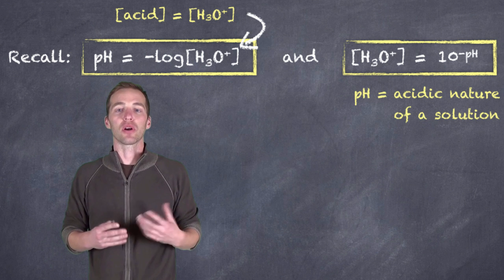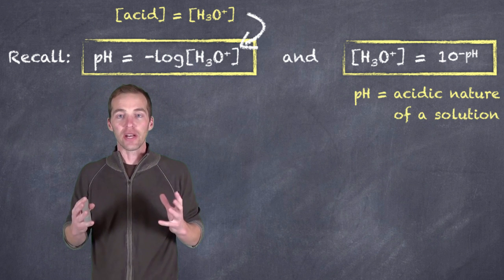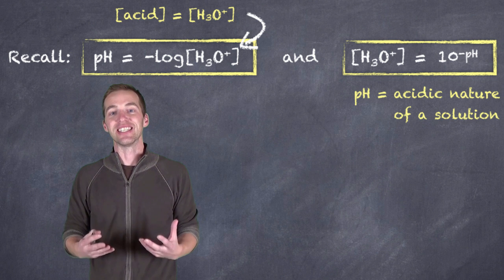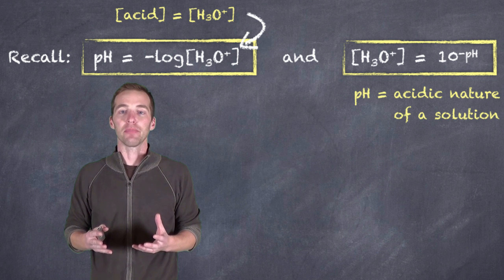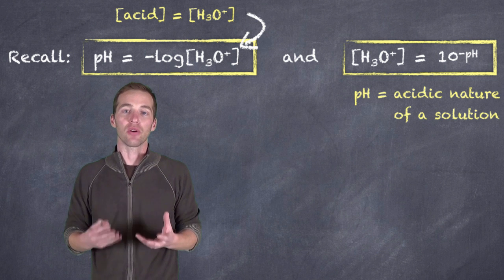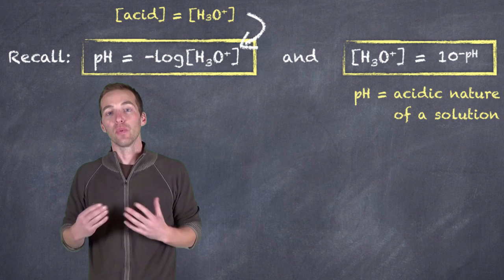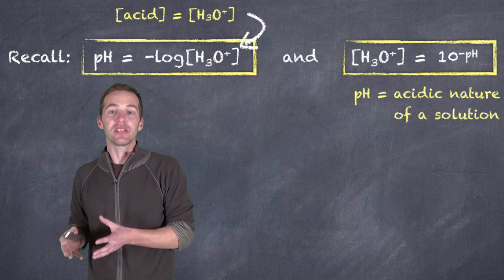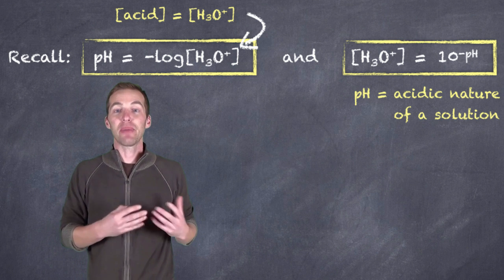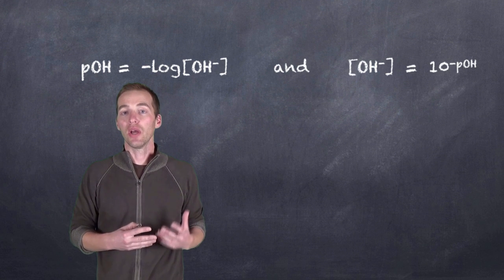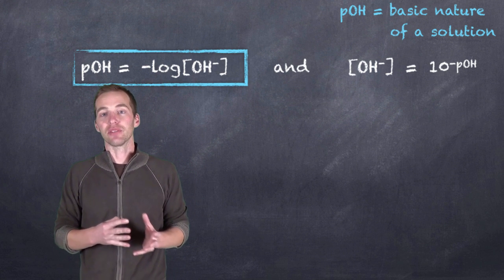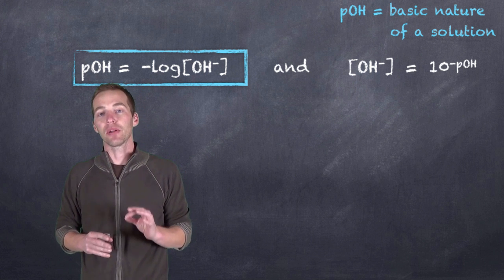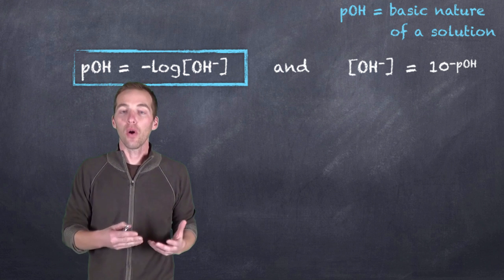The greater the concentration of hydronium ions, the lower the corresponding pH, which increases the acidic nature of the solution. Conversely, a low concentration of hydrogen or hydronium ions gives a high pH, indicating low acidity. Just as we can have high and low acidity, we can also have high and low basicity. It's the hydronium ion that gives us the acidic nature, and the hydroxide ion that gives us the basic nature.